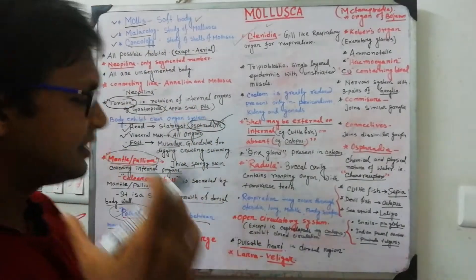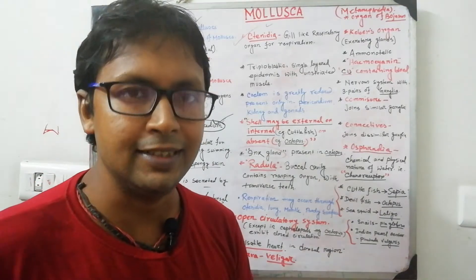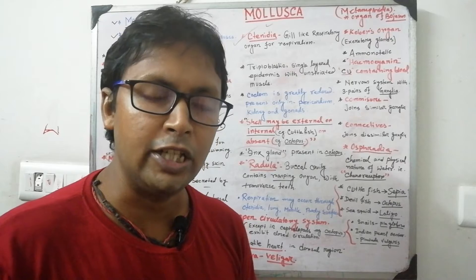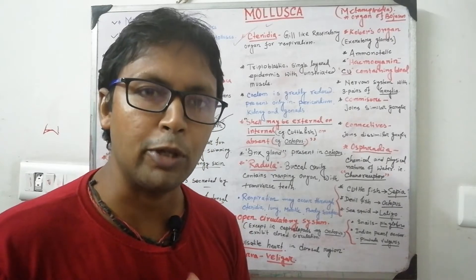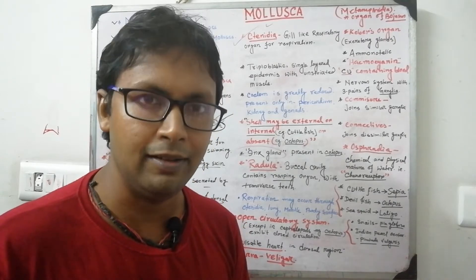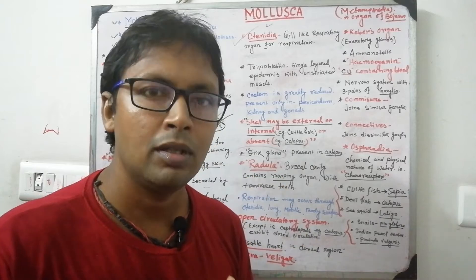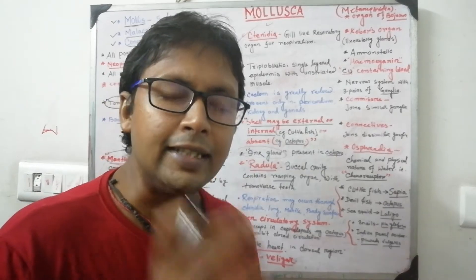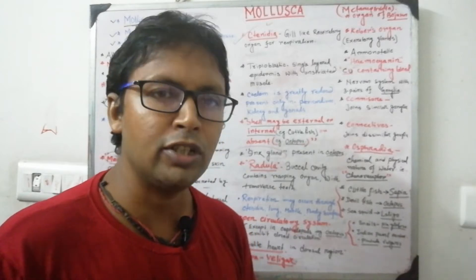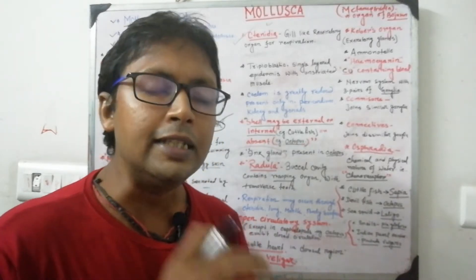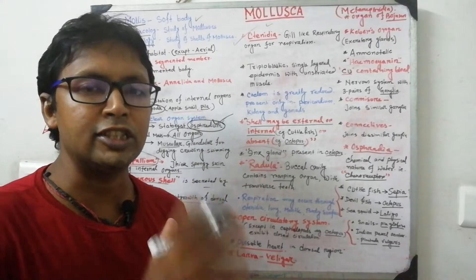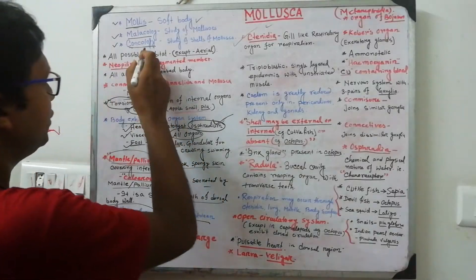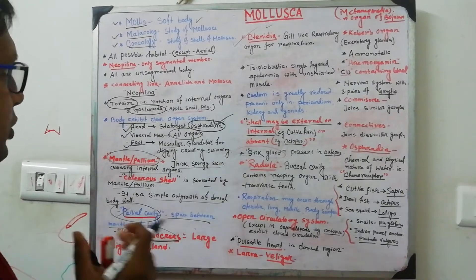Molluscs contain an outer calcium carbonate shell. This calcium carbonate is released by the mantle, a soft membranous structure we will discuss later. The study of these calcium carbonate shells is called conchology. This is a very important distinction.